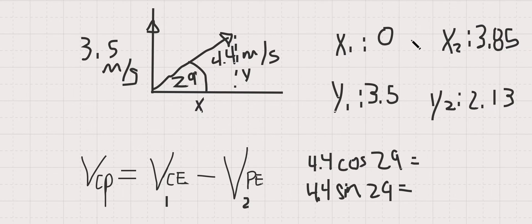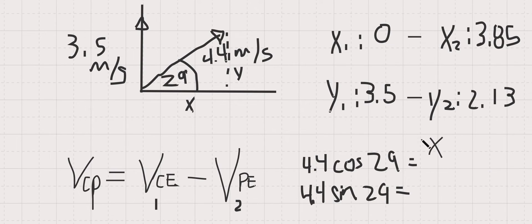So 0 minus 3.85 equals negative 3.85, and 3.5 minus 2.13 equals 1.37. So the new x value of our velocity with respect to the patrol boat will be negative 3.85 meters per second, and our y value will be 1.37 meters per second. That's your answer.